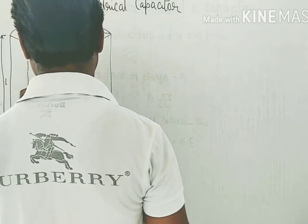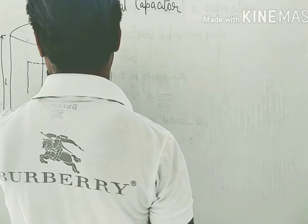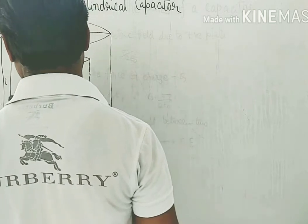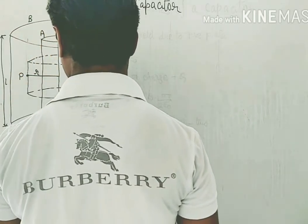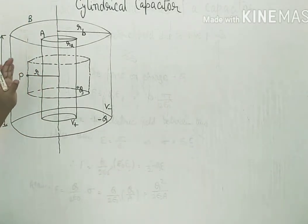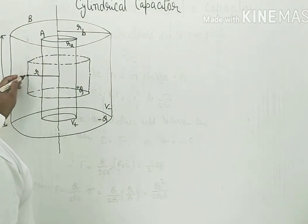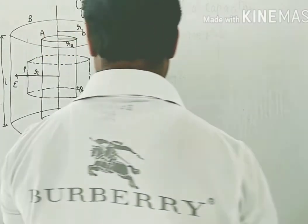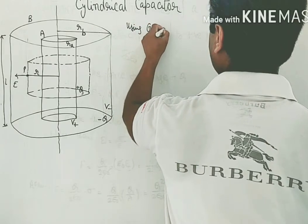This is the hypothetical cylinder being considered. From the axis, the point at which the electric field intensity is being calculated is at distance small r. The electric field will be directed radially outward along the curved face. Using Gauss's law: the closed surface integral of E dot dS equals charge enclosed divided by epsilon naught.